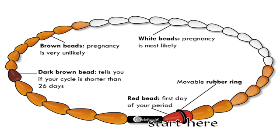If her menses start before she moves the ring to the dark brown bead, her cycle is shorter than 26 days. If her menses do not start after she has moved the ring through all the brown beads, it means her cycle is longer than 32 days. The cycle bead is an effective means of calculating her menstrual cycle, and she should also mark the first day of her menses on her calendar so the calendar can help her maintain accuracy.